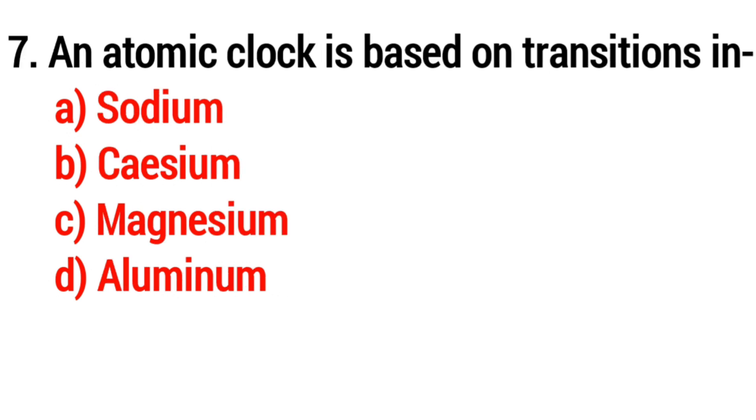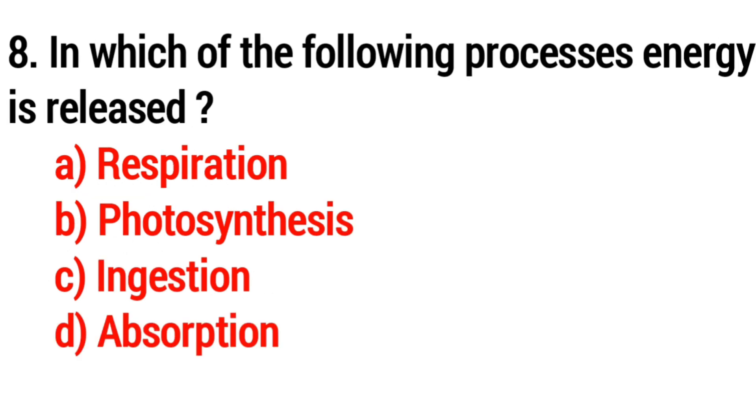Question 7: An atomic clock is based on transition in? Answer: Option B: cesium. Question 8: In which of the following processes is energy released? Answer: Option A: respiration.